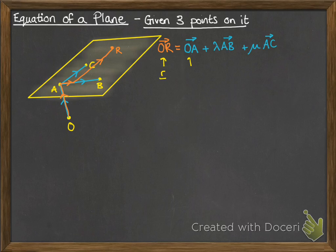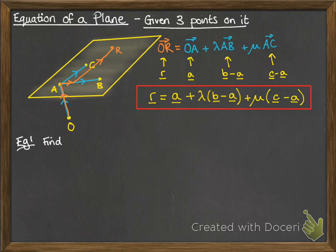So if we turn this into vector notation, looking like this, so how we would work out each one, then we get the following. And this is the equation of a plane.